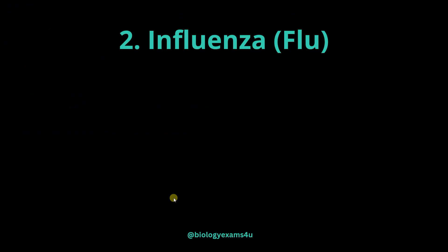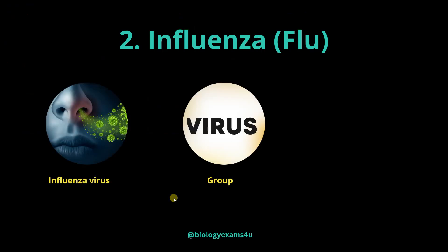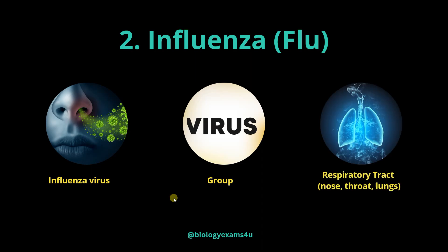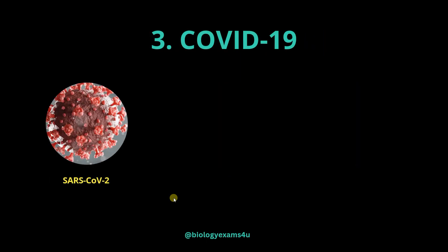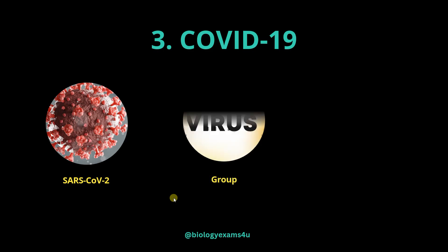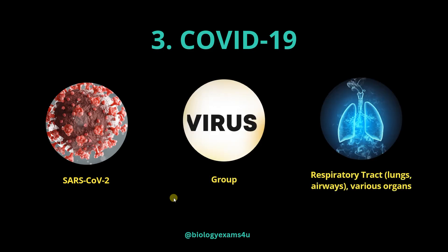Influenza, also called flu, is caused by influenza virus and primarily affects the respiratory tract, nose, throat and lungs. COVID-19 is caused by SARS-CoV-2 (Severe Acute Respiratory Syndrome Coronavirus 2) that primarily affects the respiratory tract, lungs and airways. Later, it infects various other organs.